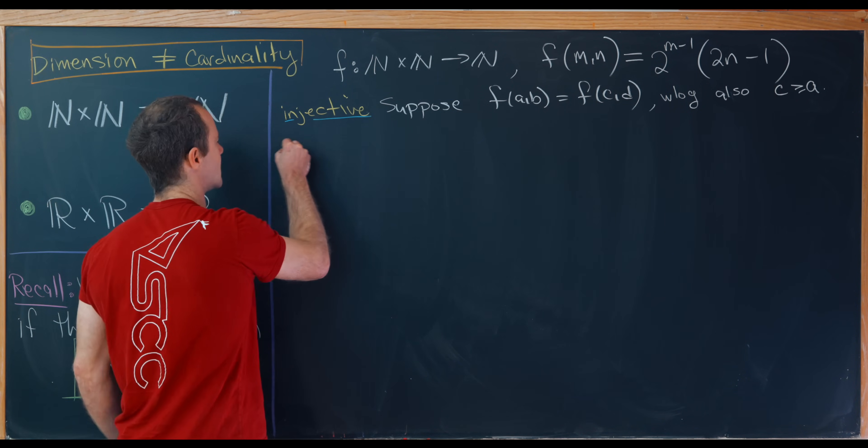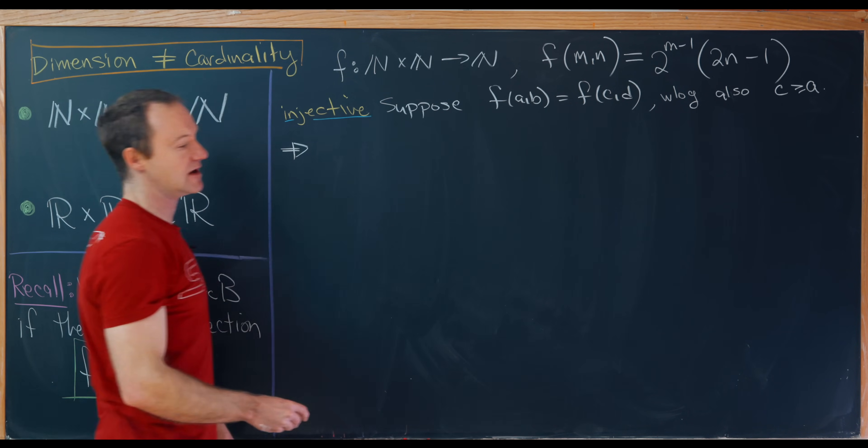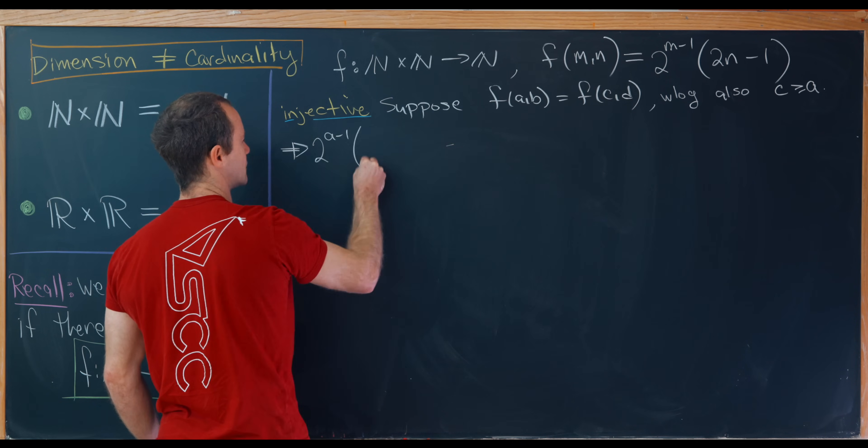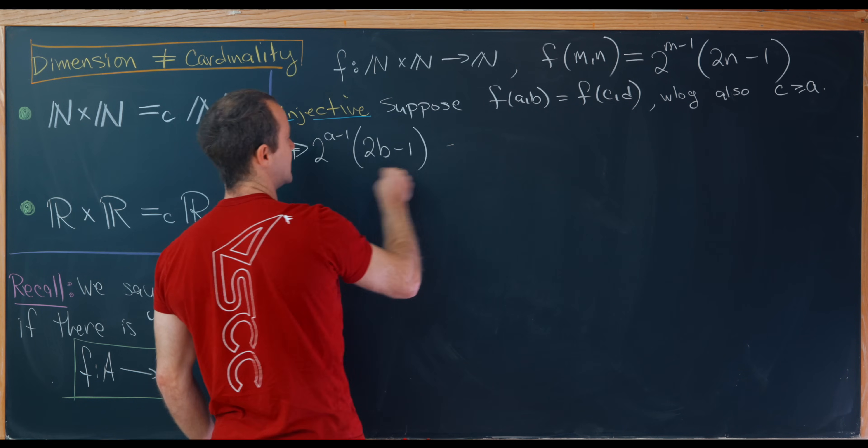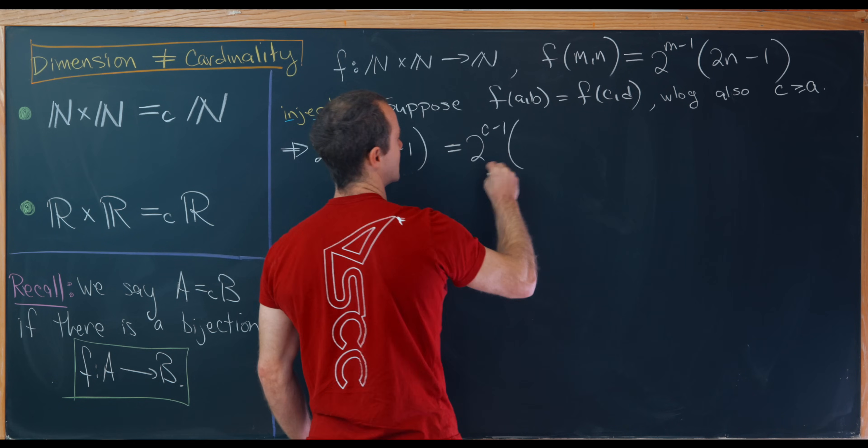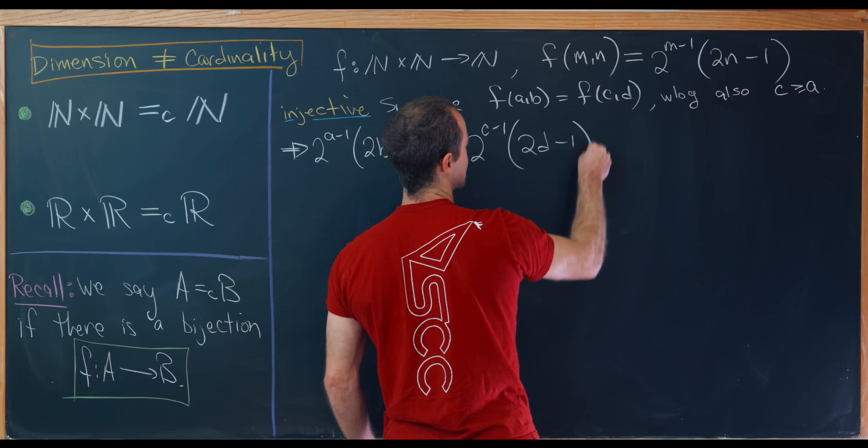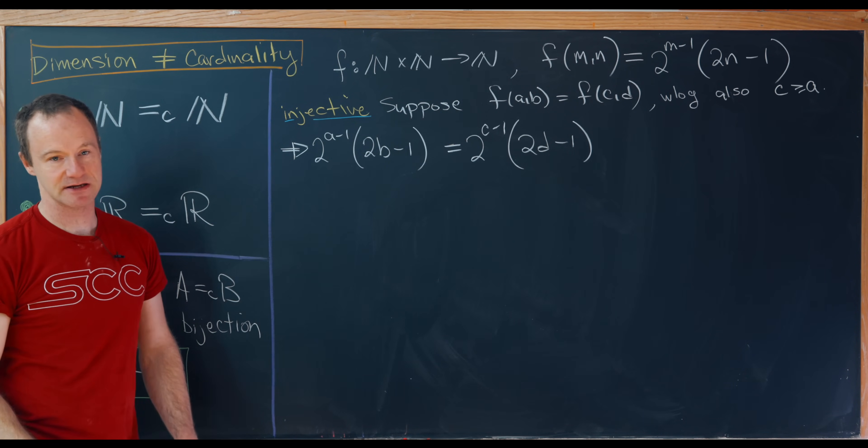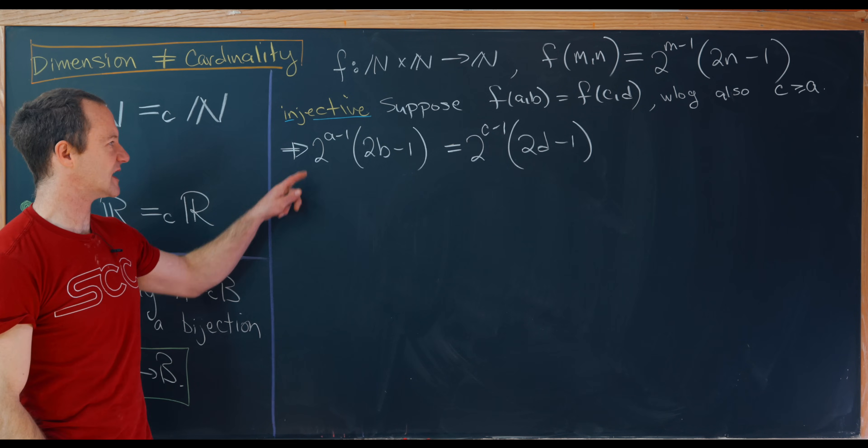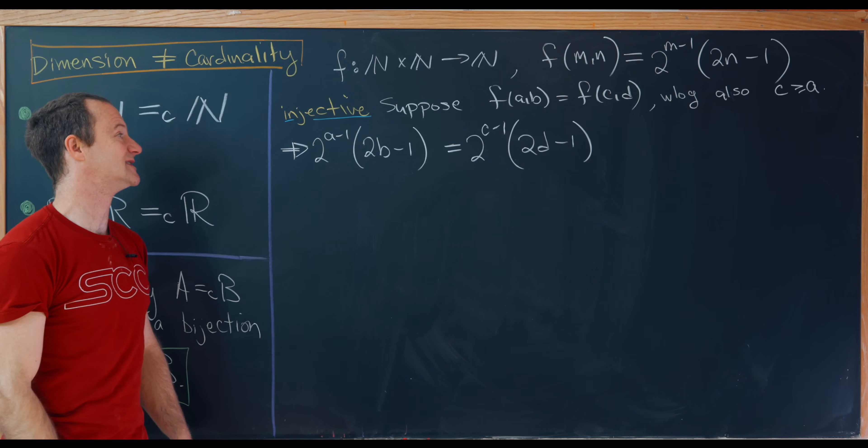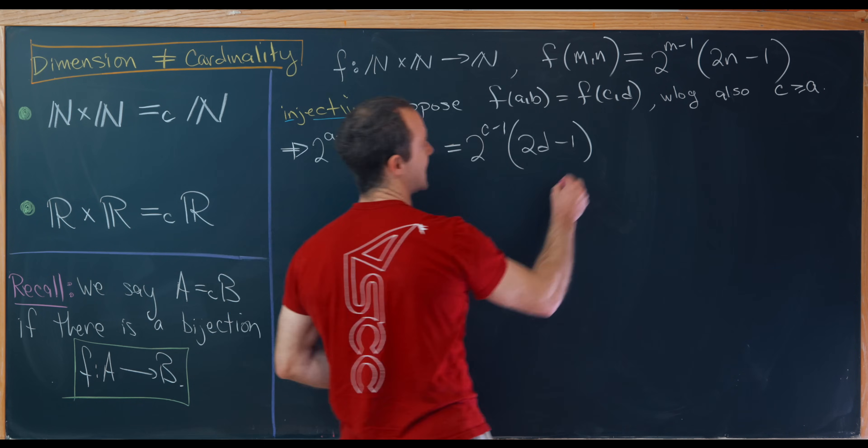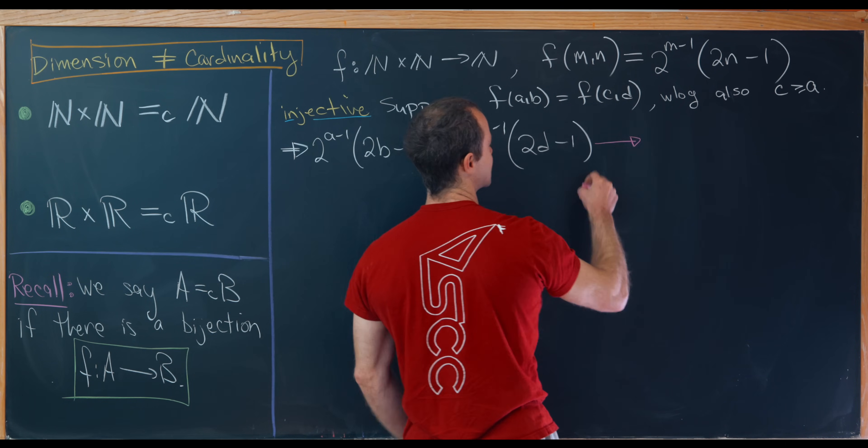So if we just think about the numbers a and c which are both natural numbers, well clearly one has to be bigger than or equal to the other. So we might as well choose our naming convention so that c is bigger than or equal to a. Okay, so now let's unpack this fact that f(a,b) equals f(c,d). So that means we'll have 2 to the a minus 1 times 2b minus 1 equals 2 to the c minus 1 times 2d minus 1. But now from here we'll just multiply both sides by 1 over 2 to the a minus 1, or in other words we will divide by 2 to the a minus 1.